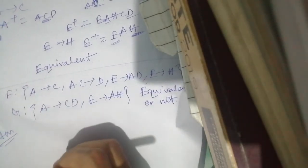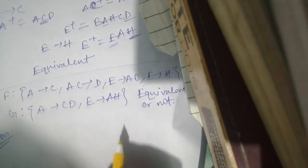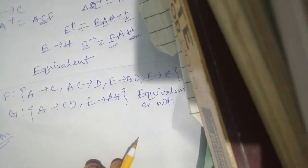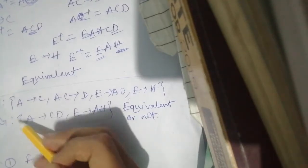So first we need to check the two conditions for proving functional equivalence. The first condition is whether F is a superset of G, and the second condition is whether G is a superset of F. If these two conditions are satisfied, then we can surely say that these two sets are functionally equivalent.